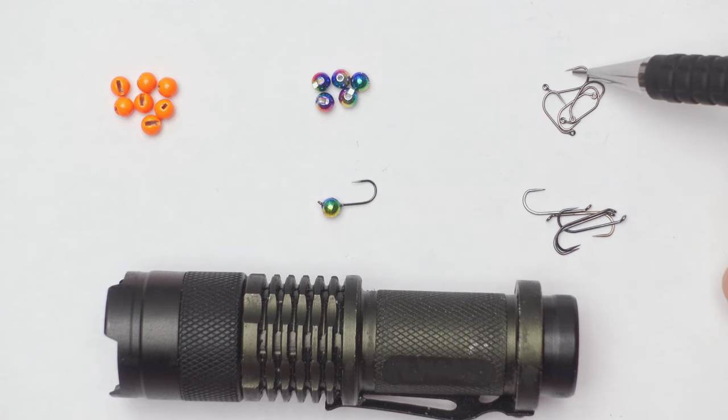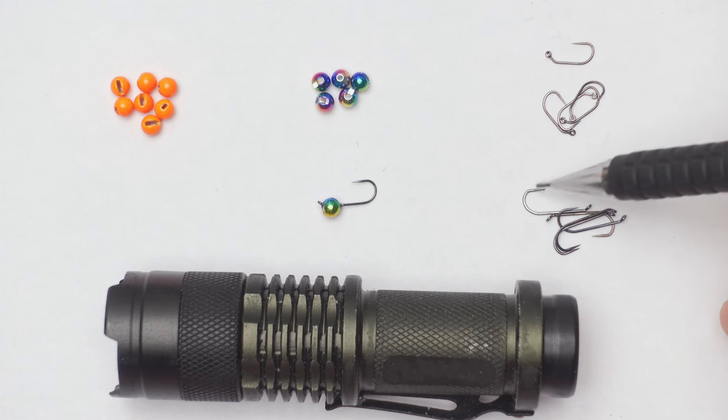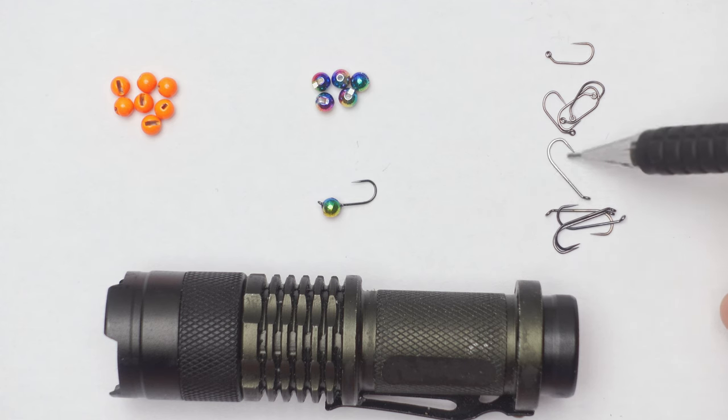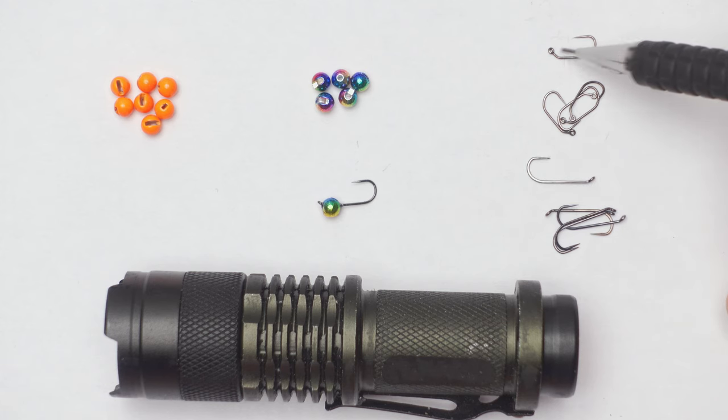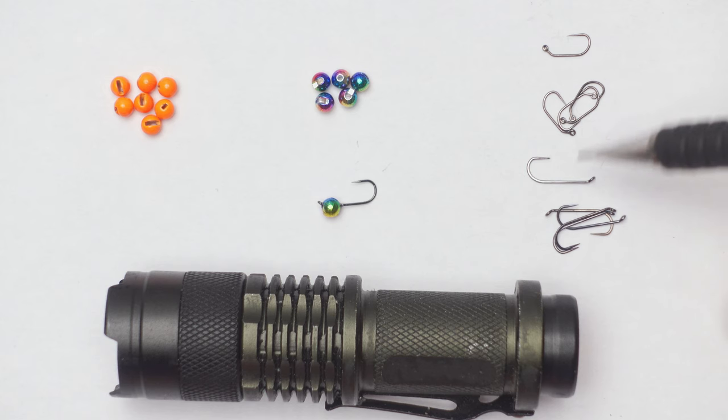Then you will need some hooks as well, and I can recommend two patterns. As you can see in the shot here, the first one is called cheek hook, where part of its shank is bent at 60 degrees. The other pattern, which is even better in my opinion, is nymph hook, and those hooks are used in fly fishing or fly tying.